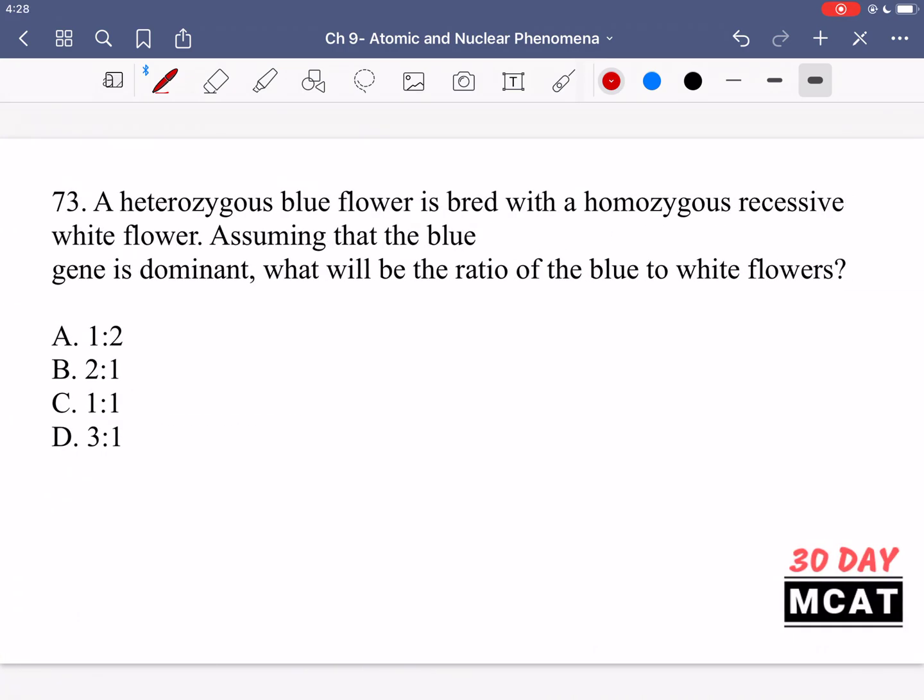In question 73, it says a heterozygous blue flower is bred with a homozygous recessive white flower. Assuming that the blue gene is dominant, what will be the ratio of the blue to white flowers? So you have a heterozygous flower, and then you have a homozygous recessive flower, and we know that blue is dominant. So if we just say B is what we're using in this case to represent the alleles.